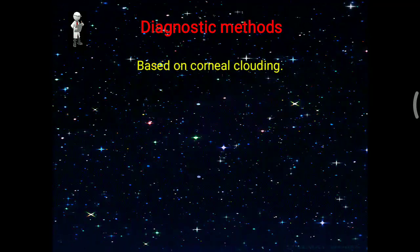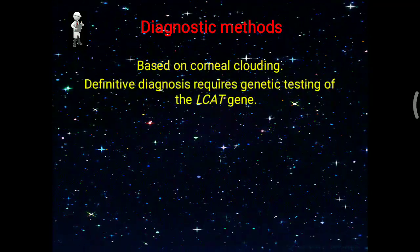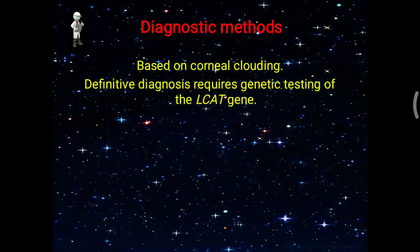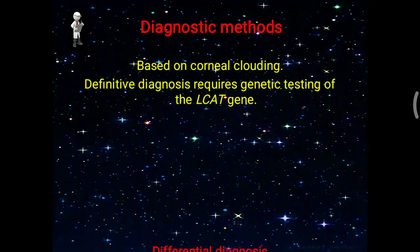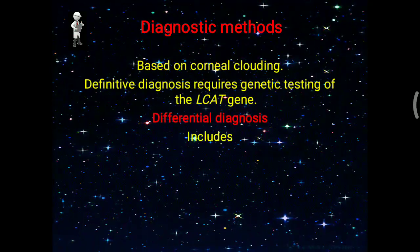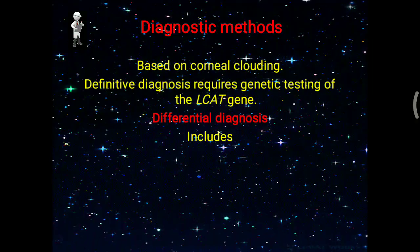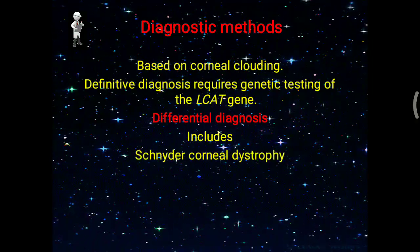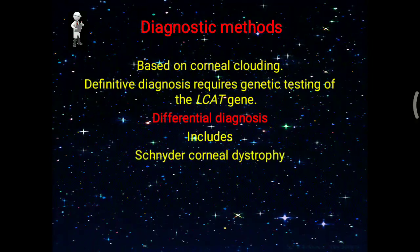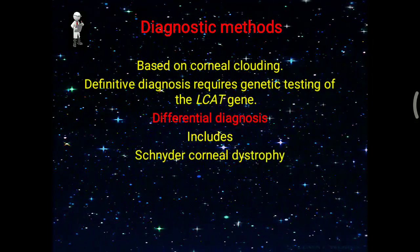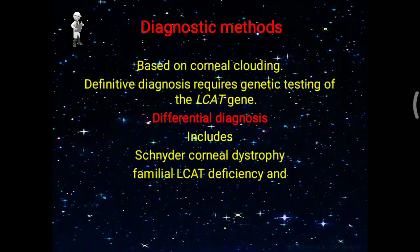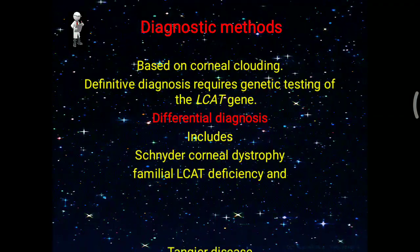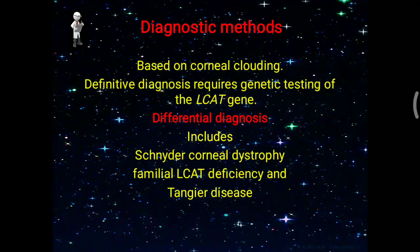Diagnosis can be based on the presence of corneal clouding, but definitive diagnosis requires genetic testing of the LCAT gene. For differential diagnosis, a similar condition is seen in Schindler corneal dystrophy, where local lipid metabolism is affected. Familial LCAT deficiency can also present similarly.